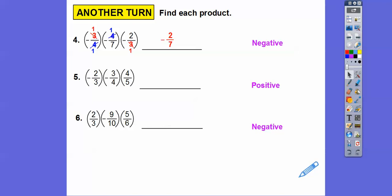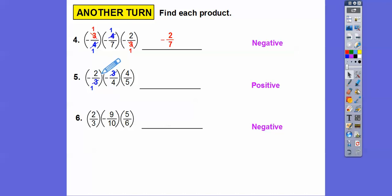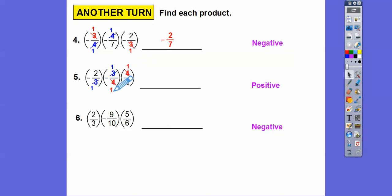The next one has two negatives — that's even — so it's positive. Cancel the three with the three, then cancel the two with the four making them one and two, and cancel the fours to ones. We're left with two times one times one on top and one times one times five on bottom: positive two fifths.